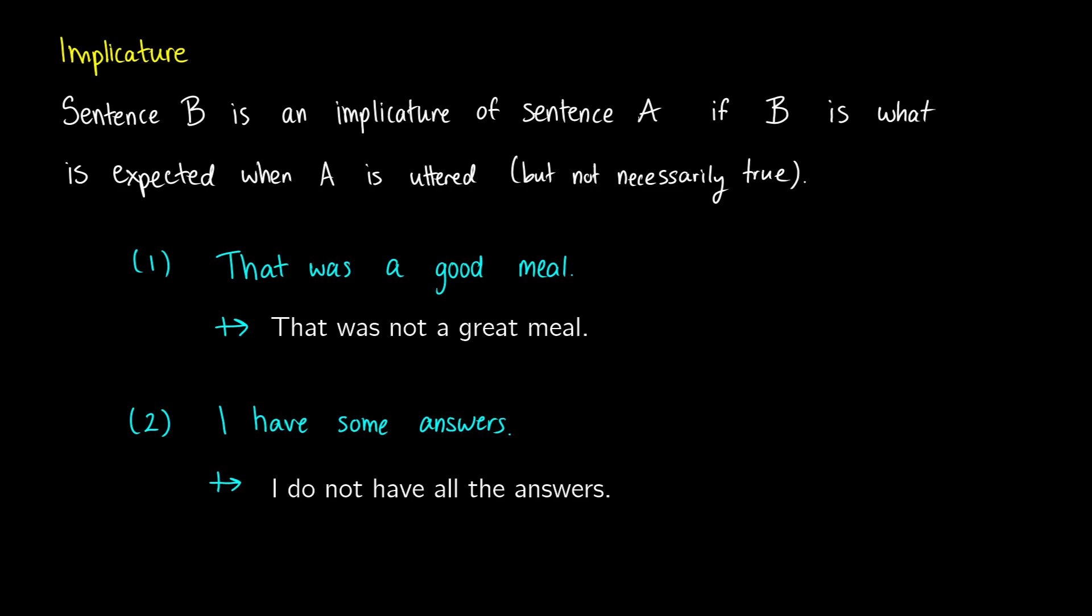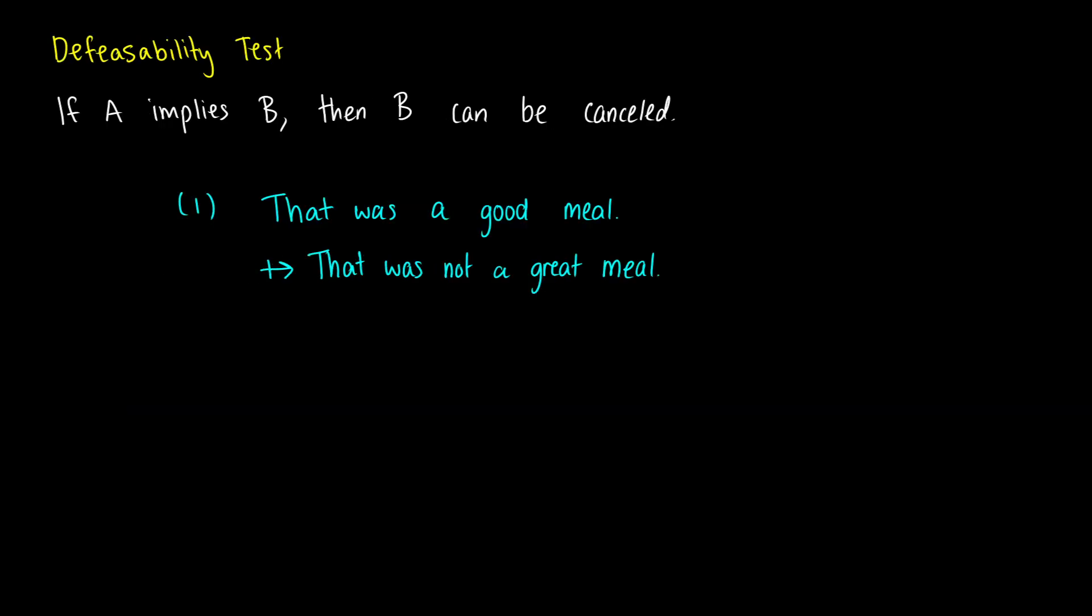And there's a couple tests that we can use for this. The first test is called the defeasibility test. And what we say is that if A is implying B, then we can cancel B. So what this means is that we can do essentially the A and not B test.